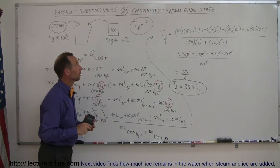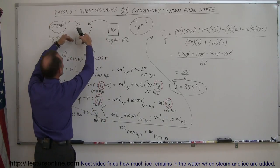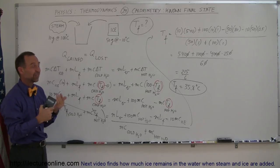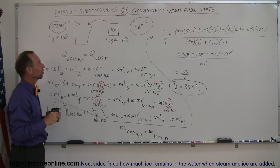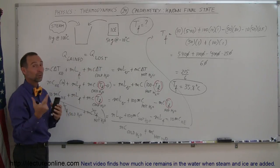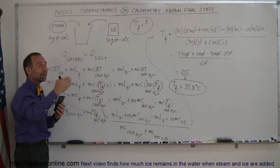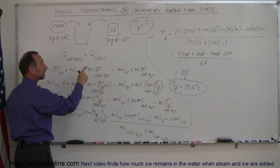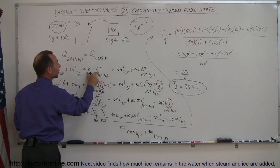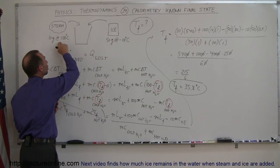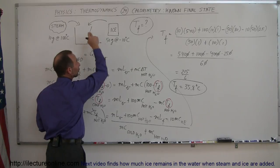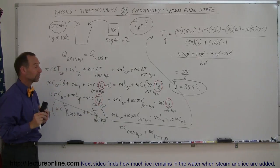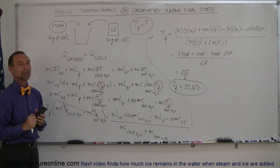Let's quickly review. We took steam and ice, put them in a bucket, and assumed the ice would melt and the steam would condense, leaving water at some final temperature between 0 and 100 — the known final state. We wrote Q gained = Q lost, identified three gaining terms for the ice (heating, melting, then cold water warming to T_final) and two losing terms for the steam (condensing, then hot water cooling to T_final). We plugged in numbers and solved to get 35.8°C.